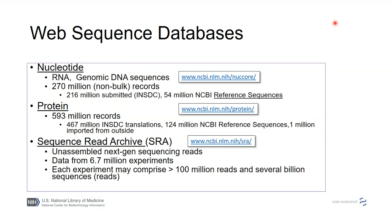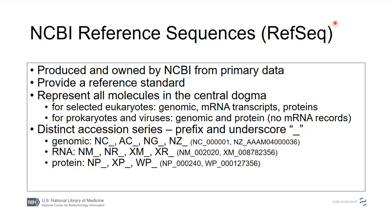Here are the sequence databases available on the web. The nucleotide database contains GenBank plus these reference sequences I already mentioned. The protein database contains translations of the international sequence database sequences, as well as reference sequences and imported databases like SwissProt and PDB. Then there is our Sequence Read Archive — the next-generation archive — which is really not something you can search effectively on the web; it requires standalone omics-type tools.